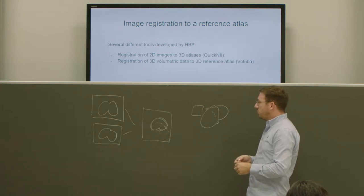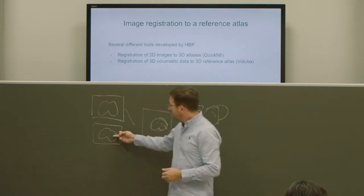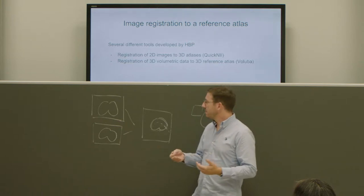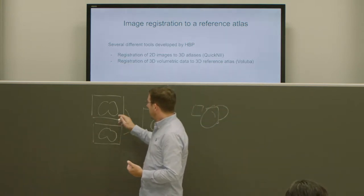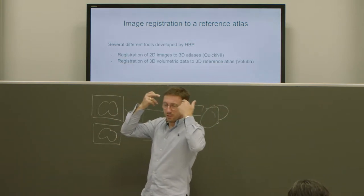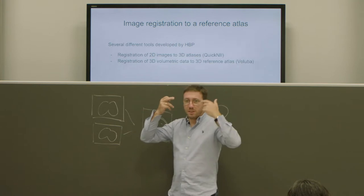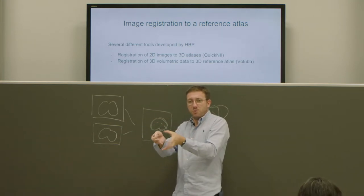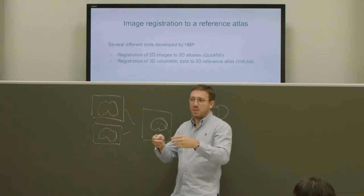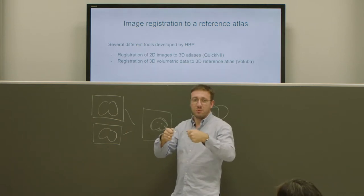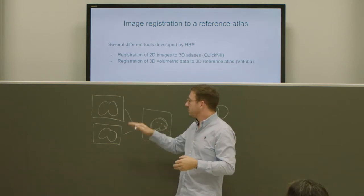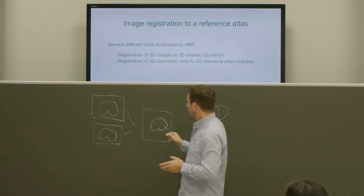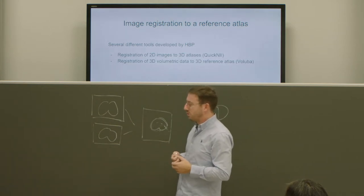If you go to the human brain and take two image sections from two different human brains, you usually end up with the problem that the folding pattern is completely different. So you cannot solve this problem just by moving, rotating, and scaling the image a little bit. You would have to do massive deformations — the problem is a different, more difficult one, and you would need more tools.